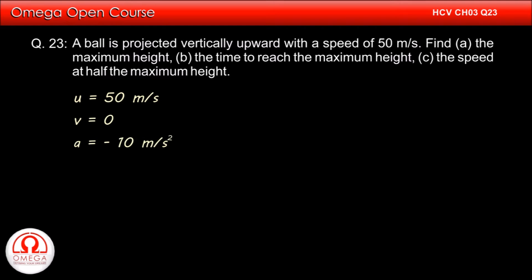Acceleration due to gravity is 10 meters per second squared in the downward direction. If we take upward direction to be positive, then acceleration due to gravity is negative.